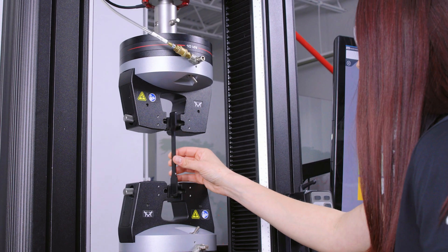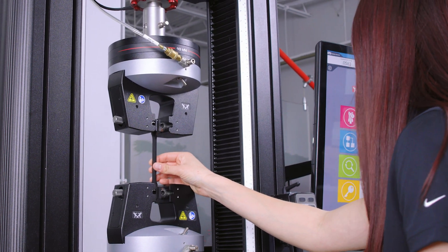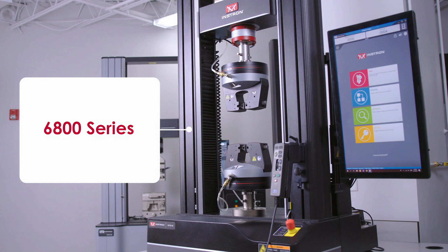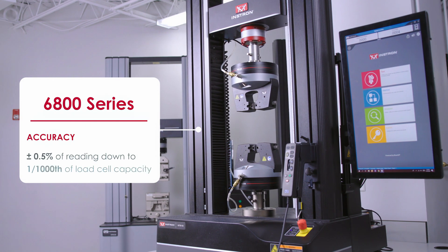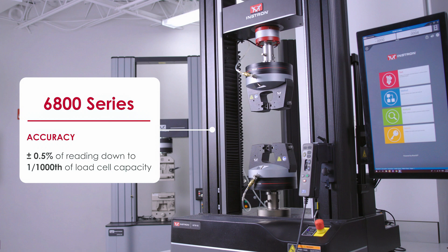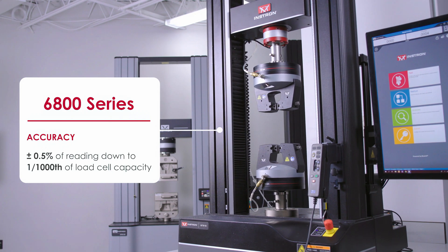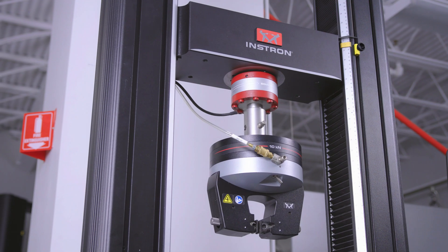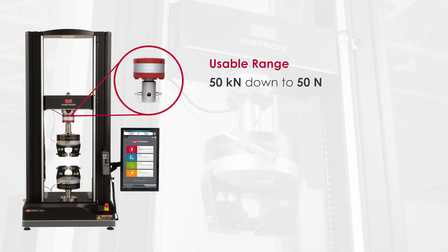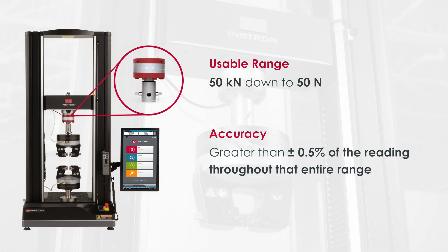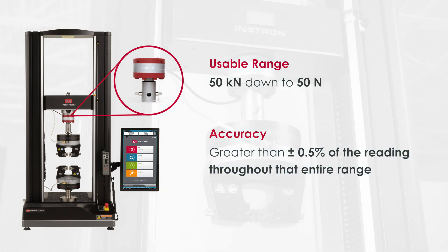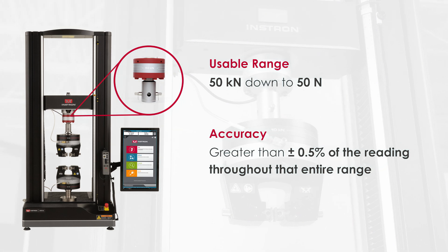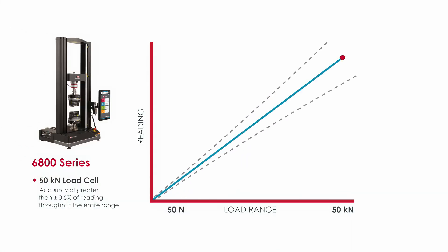Now let's look at a real-world example. Say we have our 6800 series system, which has an accuracy of plus or minus 0.5 percent of the reading down to one one-thousandth of the load cell capacity. Equipped with a 50 kilonewton load cell, this system has a usable range of 50 kilonewtons down to 50 newtons, with an accuracy of greater than plus or minus 0.5 percent of the reading throughout that entire range. At a 50 kilonewton reading, the error would be within plus or minus 250 newtons, and at a 50 newton reading, the error would be within plus or minus 0.25 newtons.